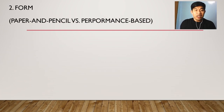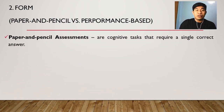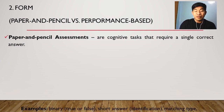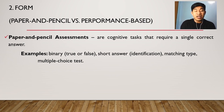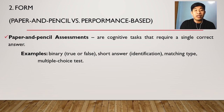The second classification is according to form, and it still has two types: paper and pencil, and performance-based assessment. Paper and pencil assessments are cognitive tasks that require a single correct answer. Examples include binary tests like true or false, short answer or fill-in-the-blanks, matching type, and multiple choice. They are called paper and pencil assessments because the teacher uses paper and pencil or ball pen. The very essence of this type is that it only generates a single correct answer — they are objective type tests.